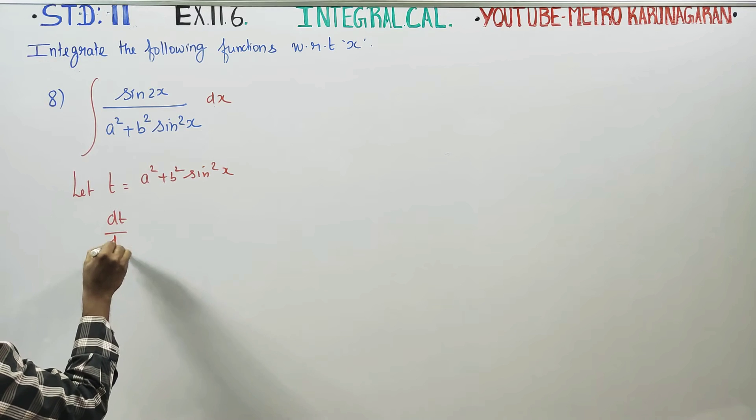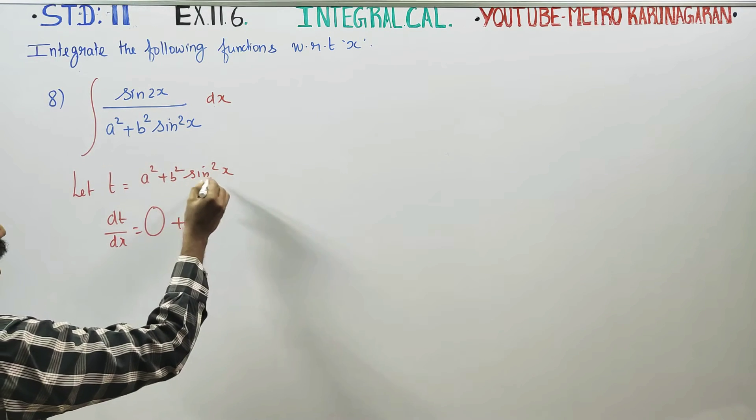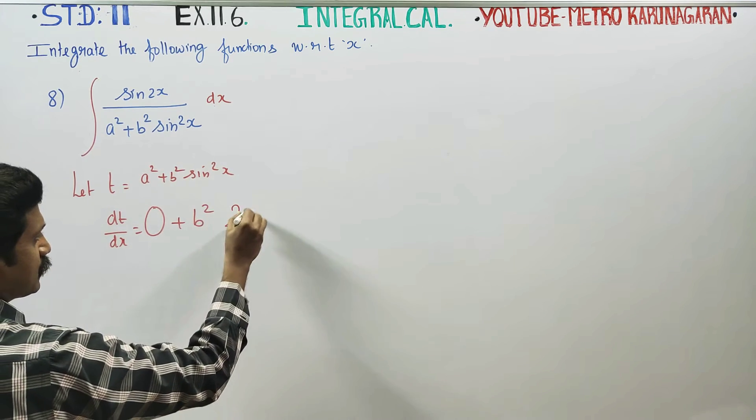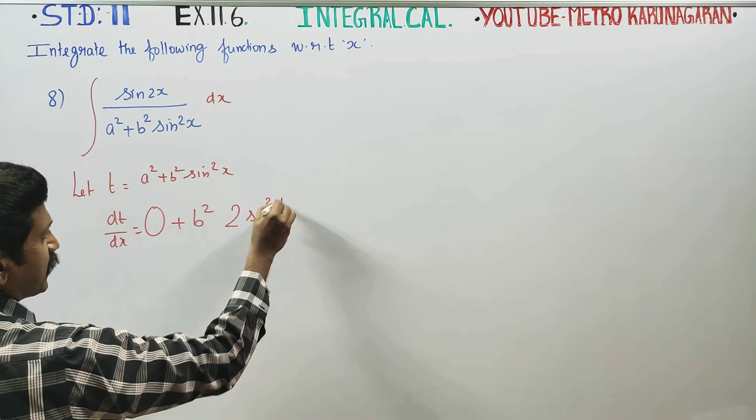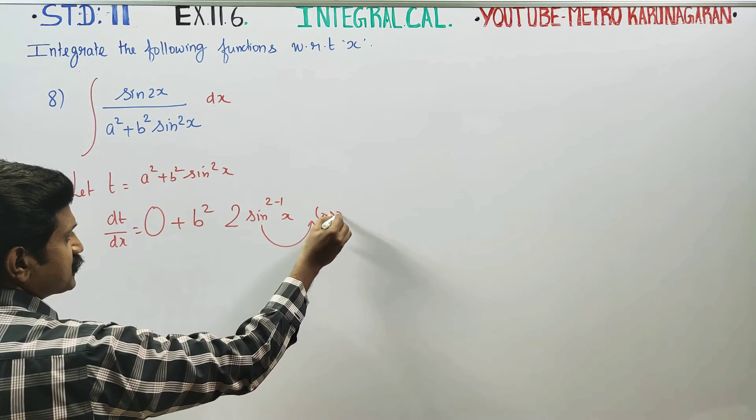dt by dx: a square differentiate gives 0, then b square multiplication. That is sine square power, 2 minus 1, sine to the power 2 minus 1 x. Power differentiate, sin 2 minus 1 x.